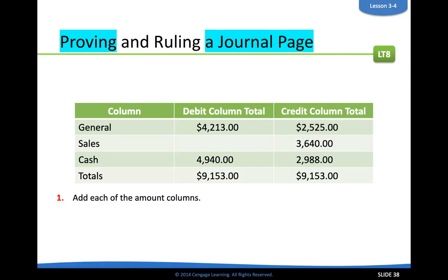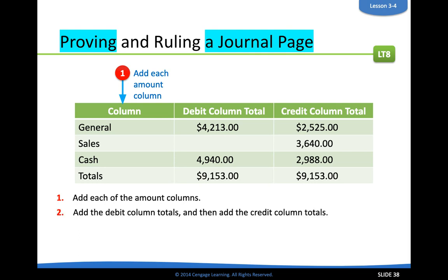What it means by proving a journal is essentially making sure that the debits and the credits equal each other. This is a little antiquated because most of the time these journals are all done using online software, and you are able to check this stuff as you go — usually by checking the balance sheet to make sure things are equal. But the principles here allow you to understand what to do and why it is done.